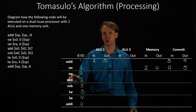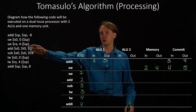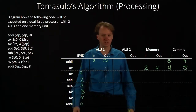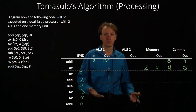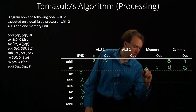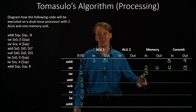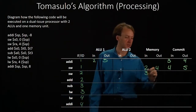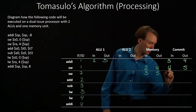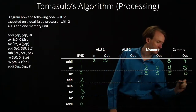Next we have a store word and an add instruction. Our second store word instruction is also dependent on the stack pointer, which means it won't be able to run until cycle four. But going off to the load store unit, it discovers it can't run in cycle four anyway — it will have to wait until cycle five. It arrives at the commit unit and can then be committed in cycle six.